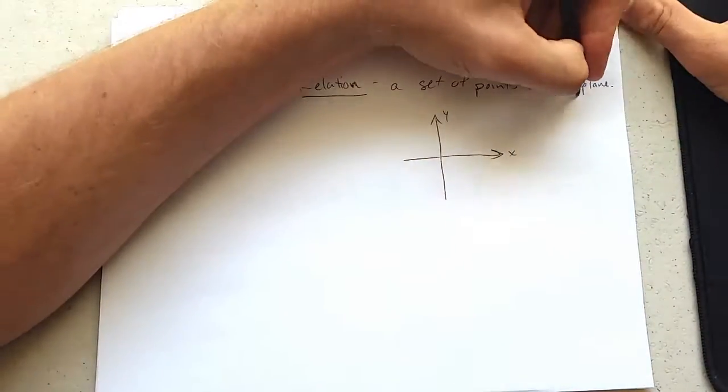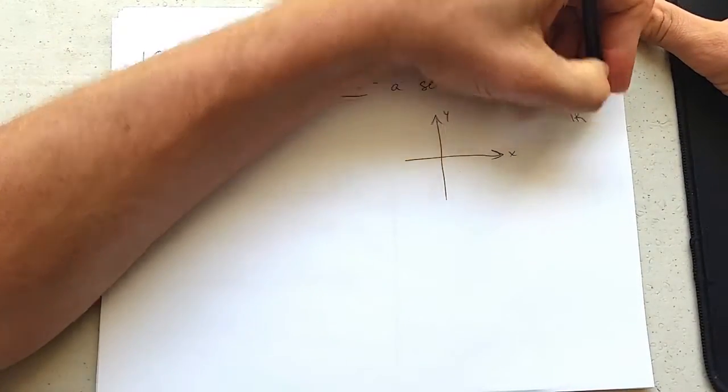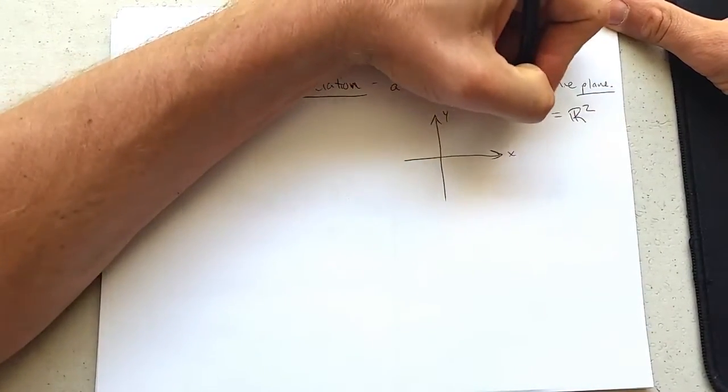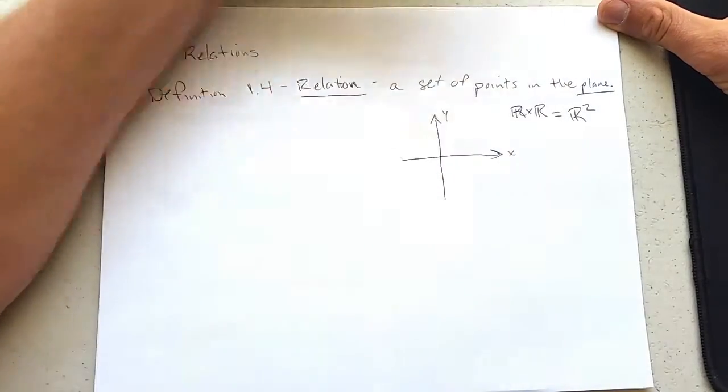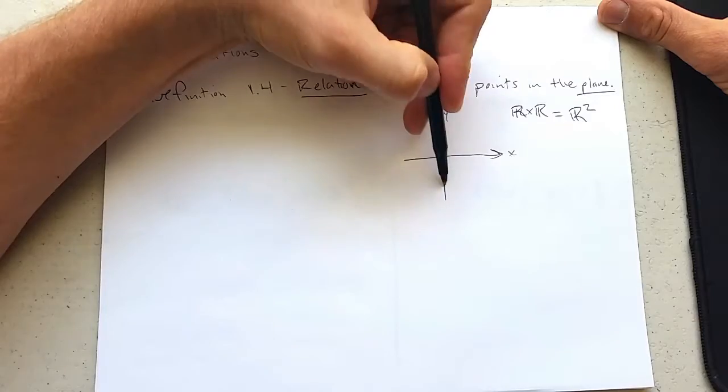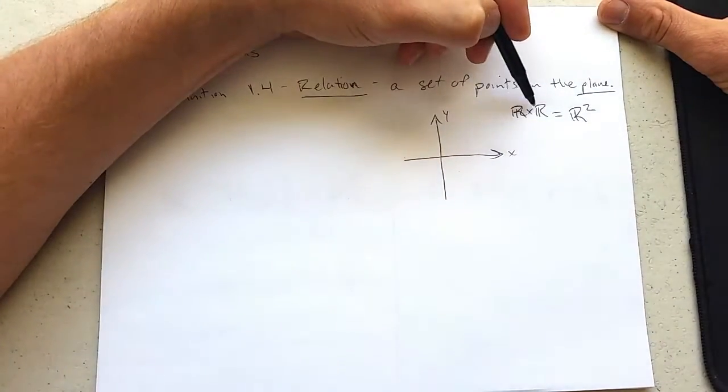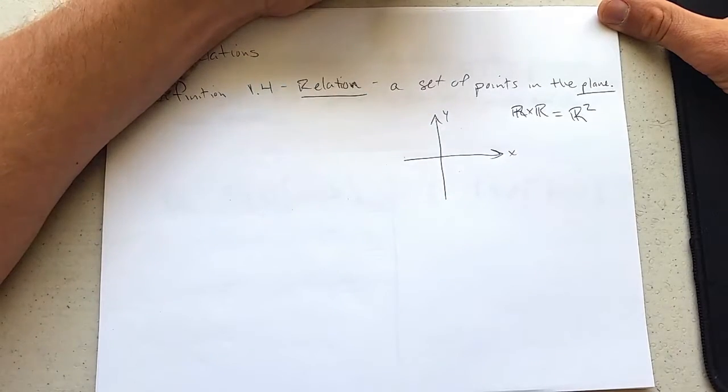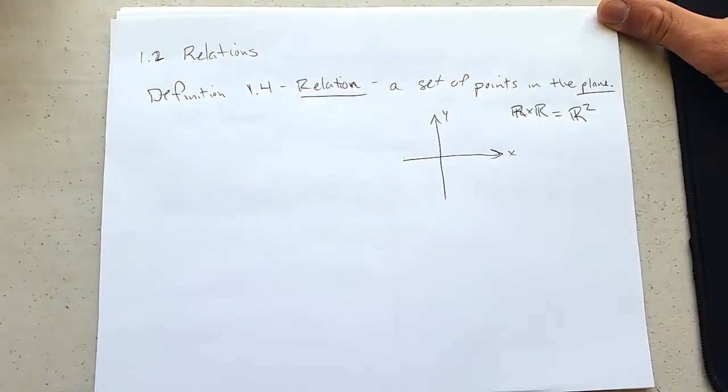We're going to use this plane a lot, so this plane we're going to abbreviate as R², which means the real numbers times the real numbers. You have a real number line, another real number line right here, and so that's why we write real numbers times real numbers. So pick up this two-dimensional object, and each one's a real number line.